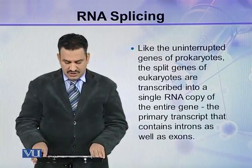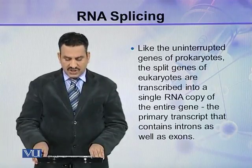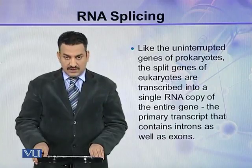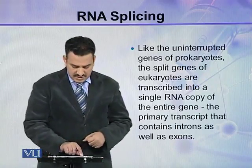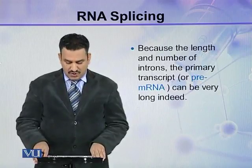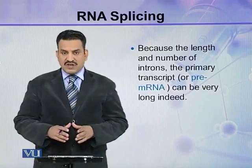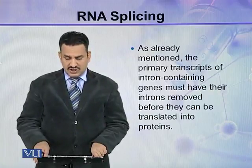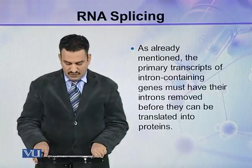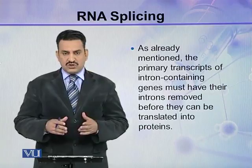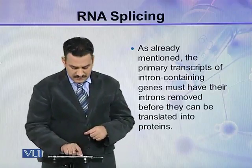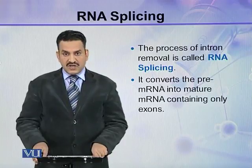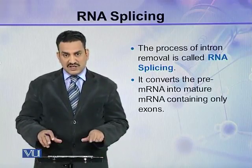Like the uninterrupted genes of prokaryotes, the split genes of eukaryotes are transcribed into a single RNA copy of the entire gene — the primary transcript — that contains introns as well as exons. The length and number of introns in the primary transcript can be very long. The primary transcript of intron-containing genes must have their introns removed before they can be translated into proteins. This process of intron removal is called RNA splicing, which converts the pre-mRNA into mature mRNA containing only exons.